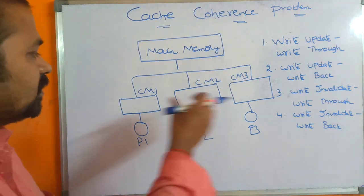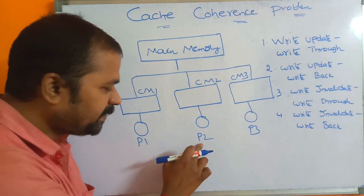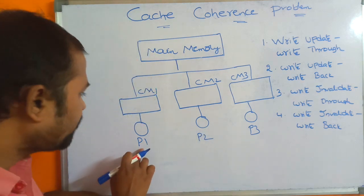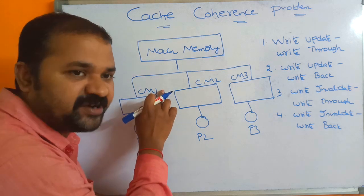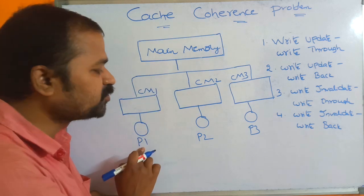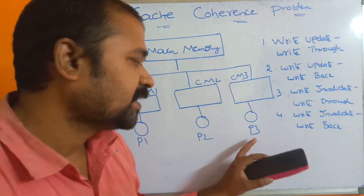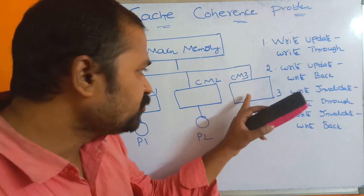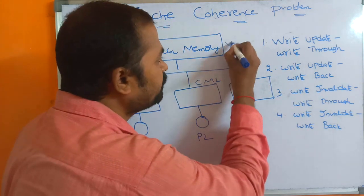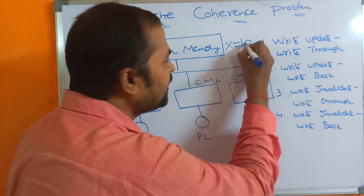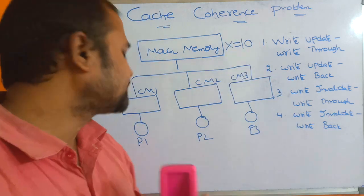Let's see this diagram. Here, this is our main memory and we have three processors: P1, P2, and P3. Processor P1 has its own cache memory, CM1. P2's cache memory is CM2, and processor P3 is using cache memory called CM3. Let us assume that in main memory we have a variable called X whose value is 10.